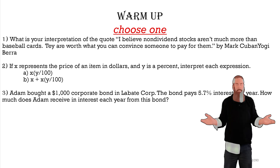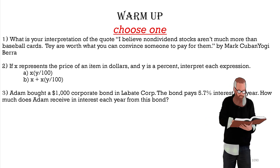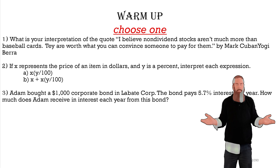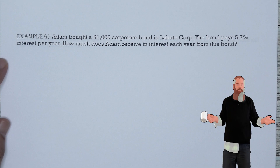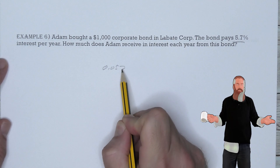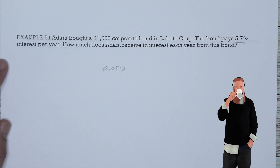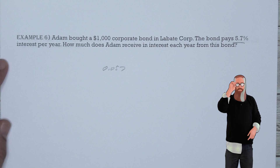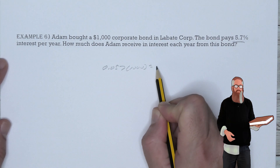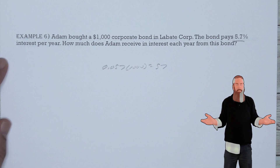Let's take a look at a problem that you will be able to do by the end of this lesson. Adam bought a $1,000 corporate bond in Labattcor. The bond pays 5.7% interest per year. How much does Adam receive in interest each year from the bond? To find the annual interest, we convert the percentage to a decimal: 5.7% is 0.057. Multiply by the face value of $1,000, and Adam receives $57 in annual interest.